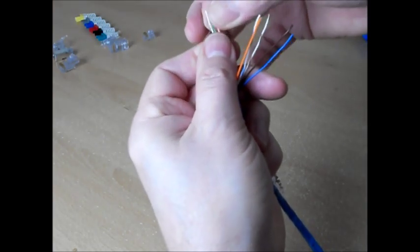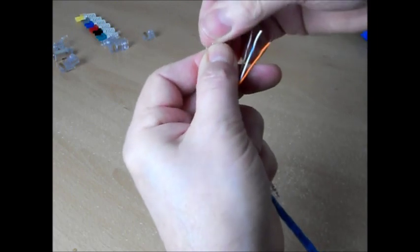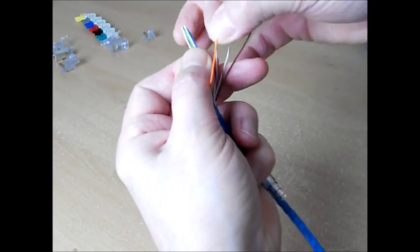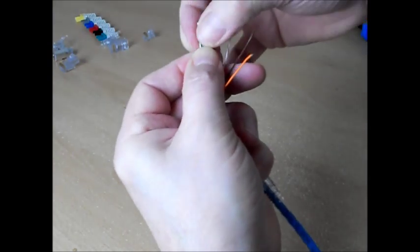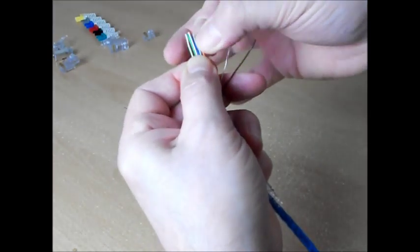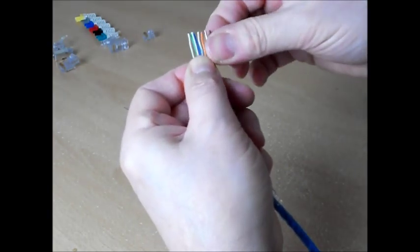I'm using specification A, so I'm lining up the cores: white and green, green, white with orange, blue, white and blue, orange, white and brown, and finally brown.